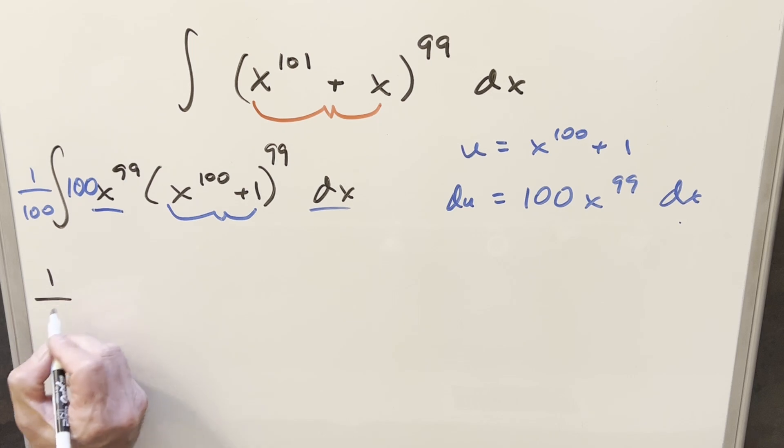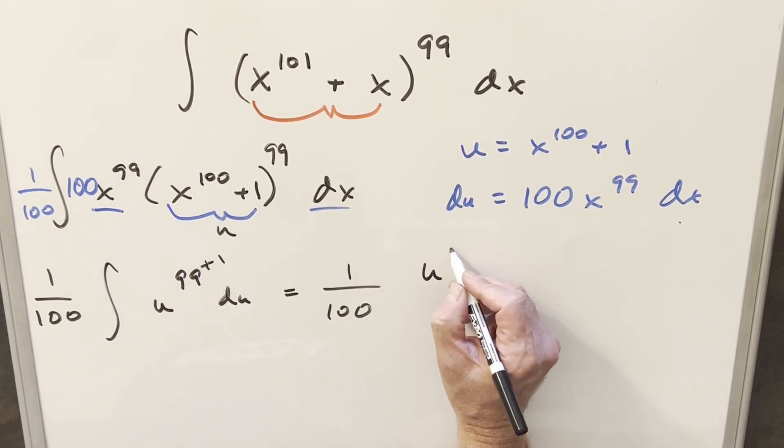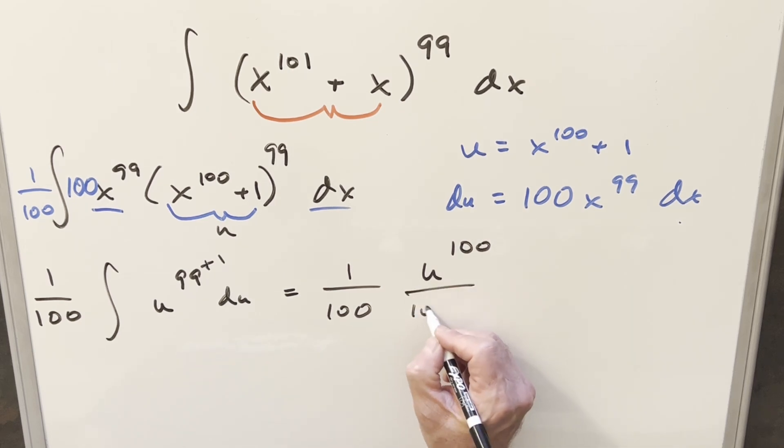Now we'll substitute this thing so we're going to have 1 over 100. This is u so this is going to transform to u to the 99 du. This is going to become u to the 100 over 100.